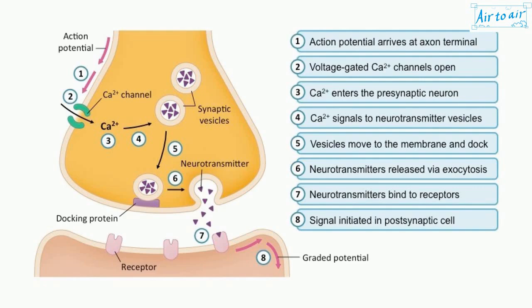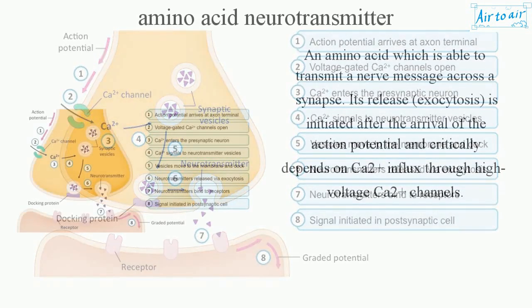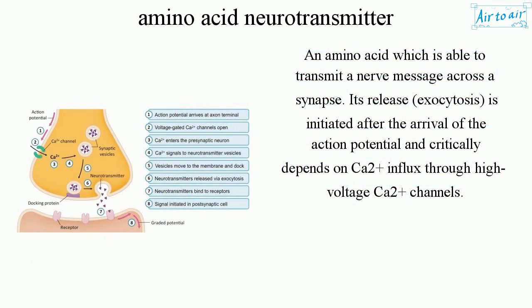Amino Acid Neurotransmitter. An amino acid which is able to transmit a nerve message across a synapse.